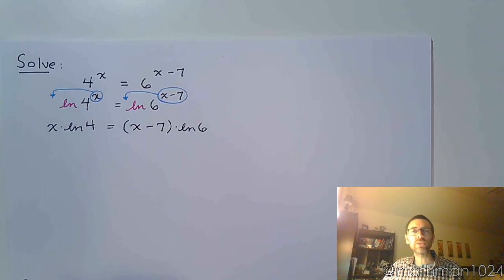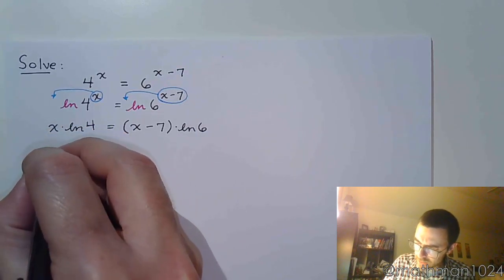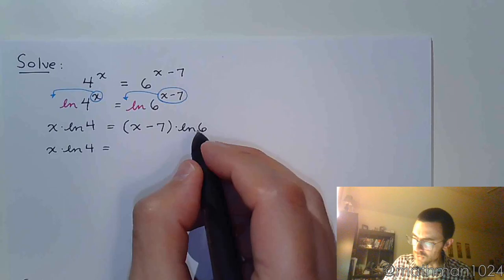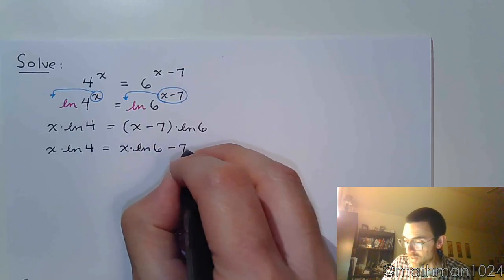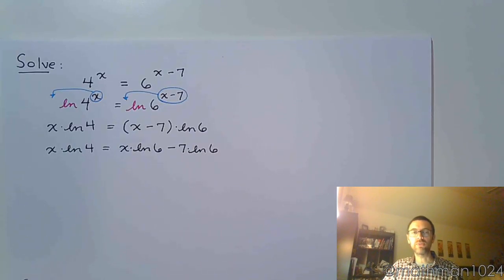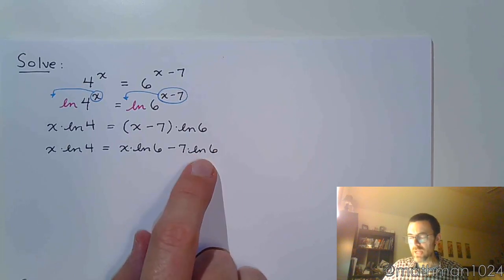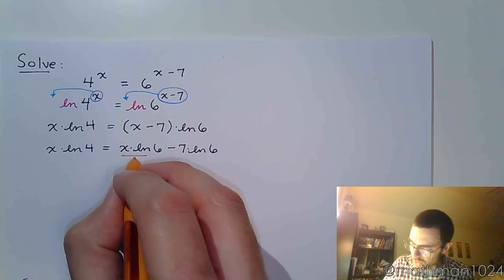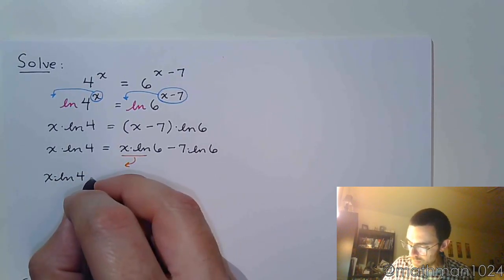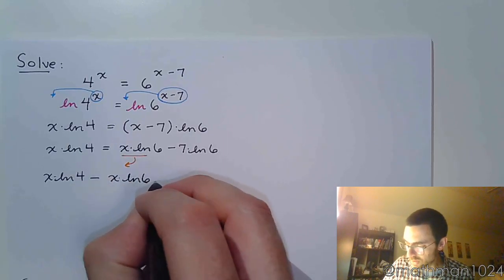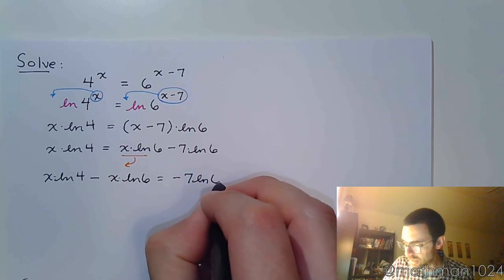See, the problem that we're going to run into now is that we have two instances of the variable. So let's go ahead and multiply on the right side. So you're going to distribute this natural log of 6, so it's x times the natural log of 6 minus 7 times the natural log of 6. When it comes down to you having multiple variables, get all of those variable terms on one side, and anything that doesn't contain x needs to go on the other side. So this is the only piece that doesn't contain x, so let him stay here and move this to the other side. So we're going to have x·ln(4) - x·ln(6) = -7·ln(6).